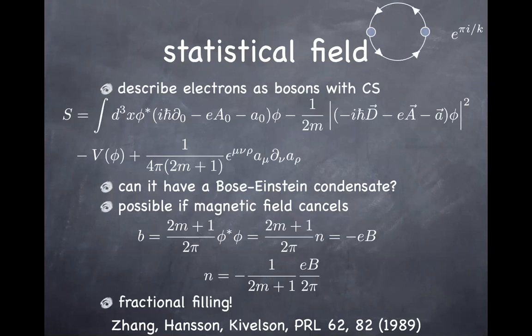This goes back to a paper by Jain, Hansen, and Khvelson from 1989. In quantum Hall systems we're talking about a system of electrons strongly coupled with each other. Using the trick of the statistical field, I can instead describe electrons as a boson field coupled to this statistical field. I need to choose the denominator of the coefficient of the Chern-Simons term to be odd, so that I can assign an odd magnetic flux to the electrons — which are bosons here — so that when you exchange two electrons it ends up giving a minus sign. Describing electrons as a boson plus Chern-Simons term is supposed to be equivalent to treating electrons as fermions.